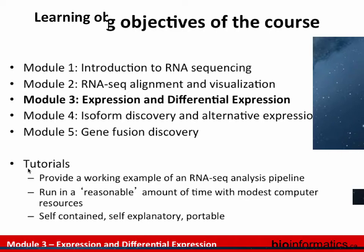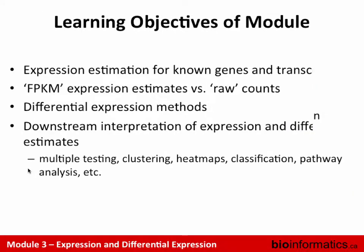This is Module 3, where we're going to take the results of Modules 1 and 2 — basically our alignments — and try to calculate expression and differential expression estimates from that data. The learning objectives are to talk about how we generate expression estimates for known genes and transcripts, discuss FPKM versus raw counts, introduce differential expression methods, and then briefly cover some downstream interpretation issues, which are really the topic for a whole other course.